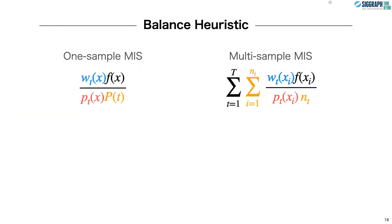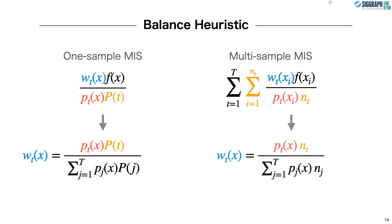So given these one sample and multi-sample MIS estimators, we would then ideally want to find a weighting function that results in efficient estimators. Veech and Gibas proposed the provably good balance heuristic that weights each technique proportional to their PDF. In the case of the one-sample estimator, the balance heuristic is not just good, but optimal. So we have a provably good combination of a discrete set of sampling techniques using MIS.